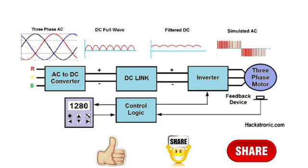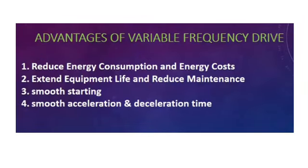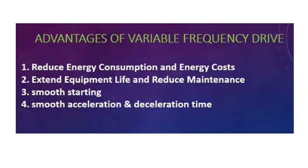From the DC bus, the supply goes into the inverter, where it is converted from DC back to AC. Then at the output, we connect the appliances which we need to control. That is how the VFD actually works.